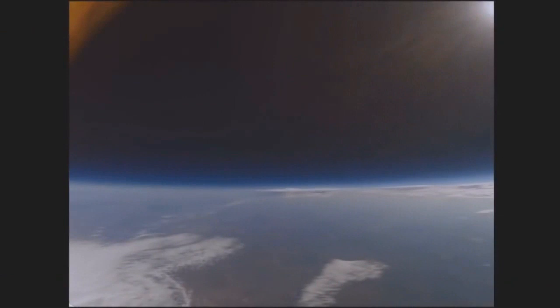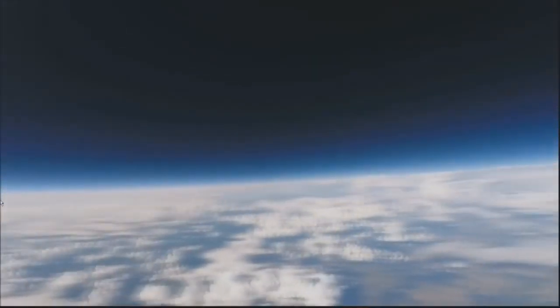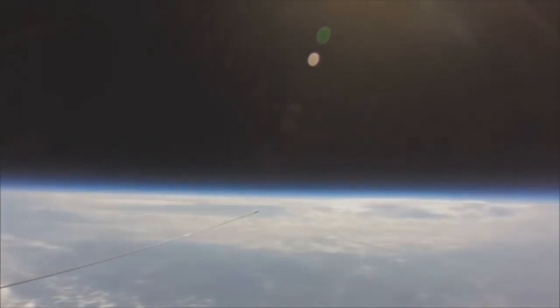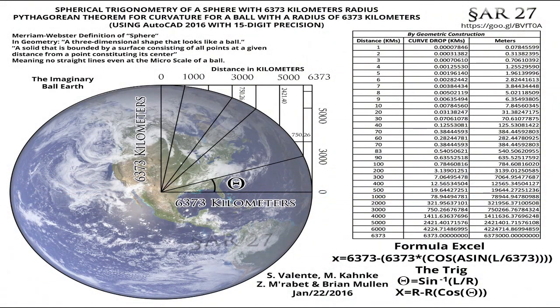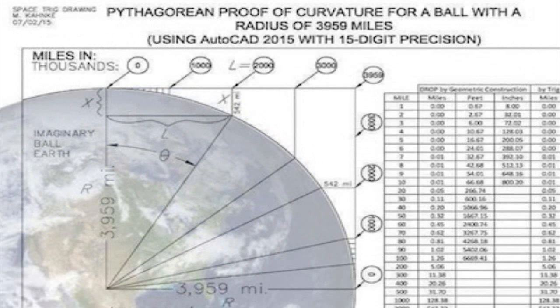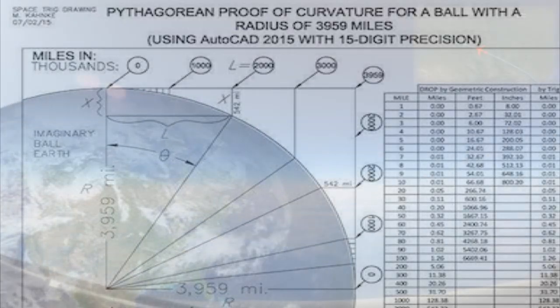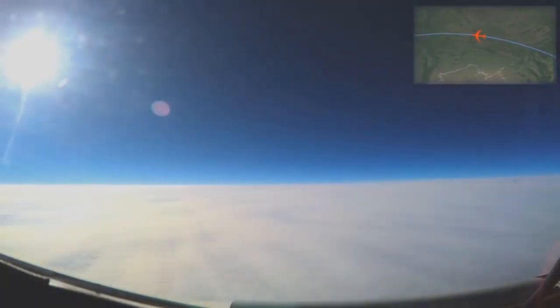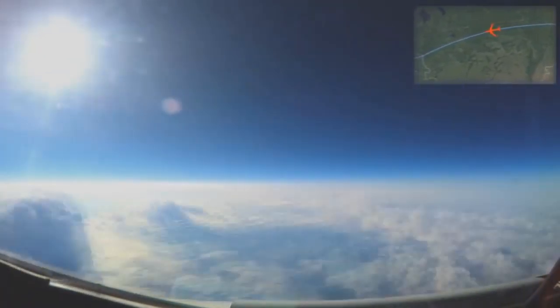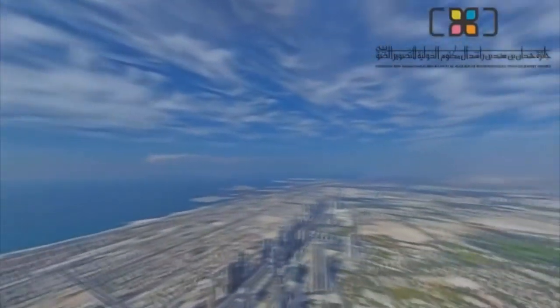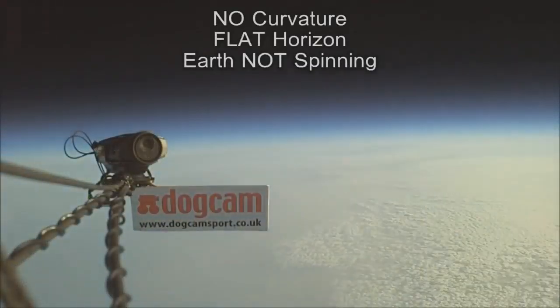For Earth to be a ball of the dimensions claimed means that it must curve upwards or downwards at a rate of h = r - r·cos(s/2r), where h equals height, r equals radius, and s equals arc length. When calculated for up to nearly a thousand miles, this trigonometrical formula can also be simplified to 7.98 inches per mile squared. This means an easily visible and measurable curvature of 6 feet after 3 miles, 24 feet after 6 miles, 54 feet after 9 miles, and so on, would and must exist if we truly lived on a concave or convex Earth 24,900 miles in circumference.